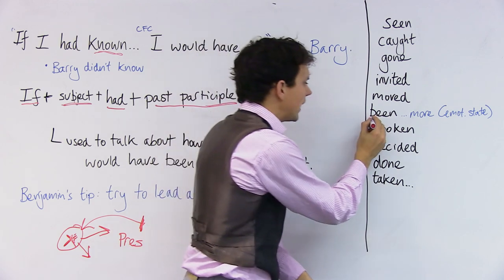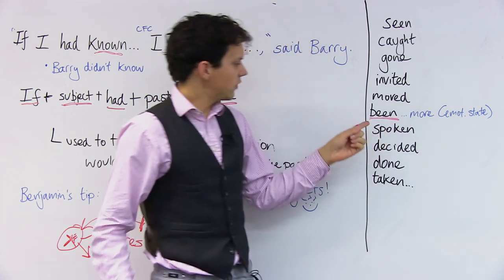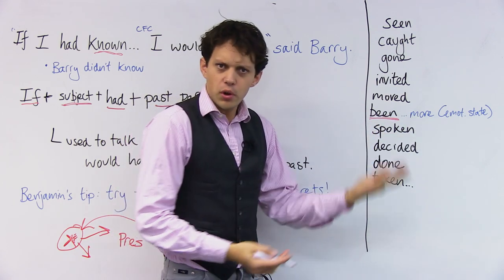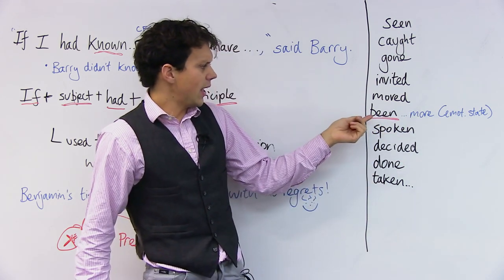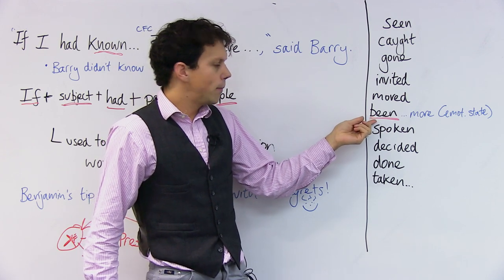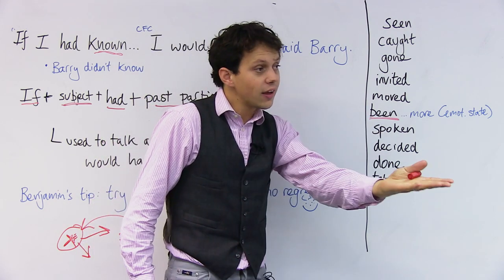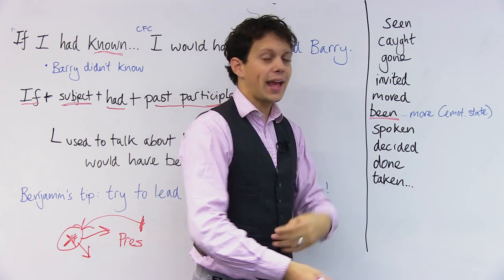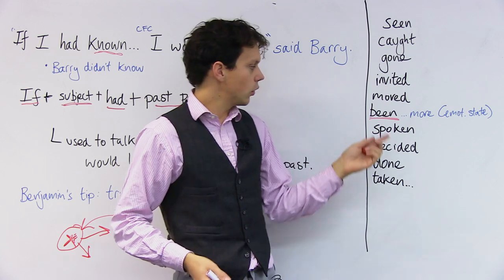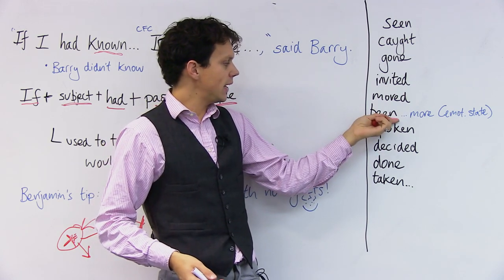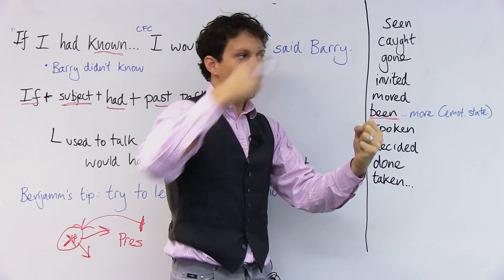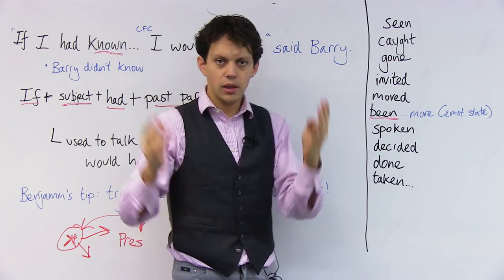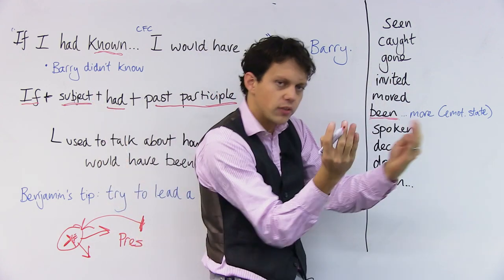Now, been is an interesting one because we can use it with different emotional states. So if I had been kinder to Billy, he might have been happier. Or if I had been more bold, I might have gone to New York. Again, these two parts of the sentence.